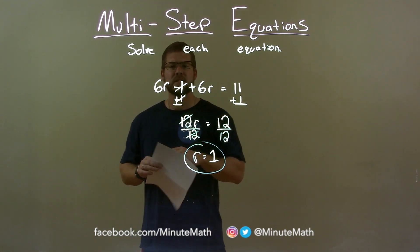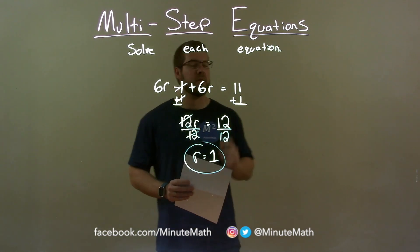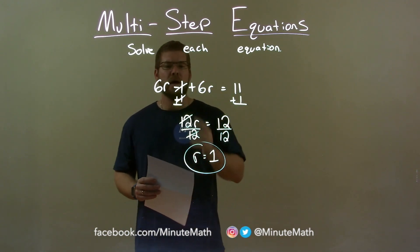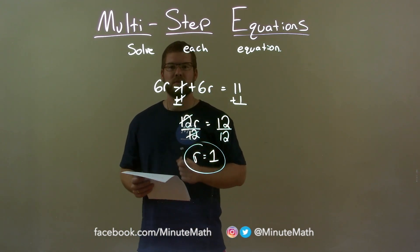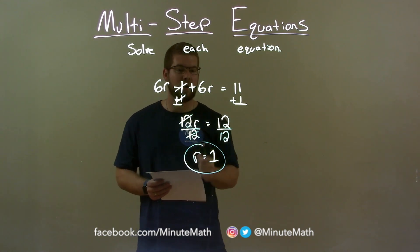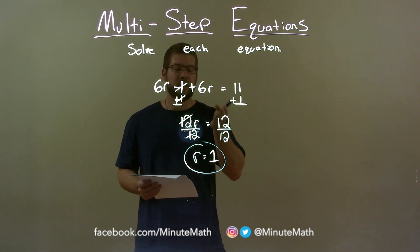Quick recap, we're given 6r minus 1 plus 6r equals 11, and we have to solve for r. Add 1 to both sides, combine my 6rs together to get 12r equals 12, then divide both sides by 12, and r by itself equals 1, our final answer.